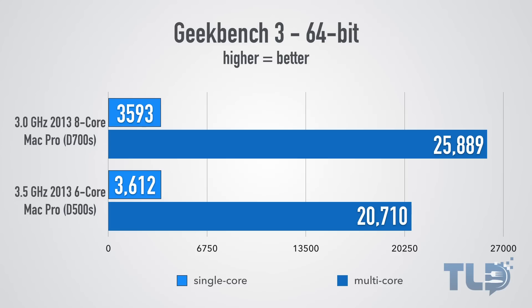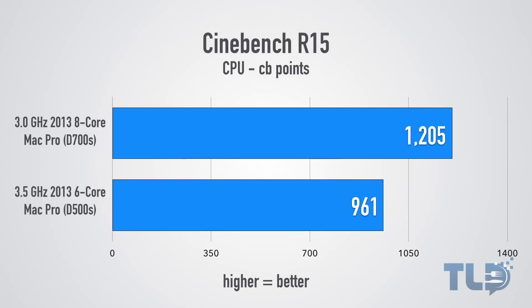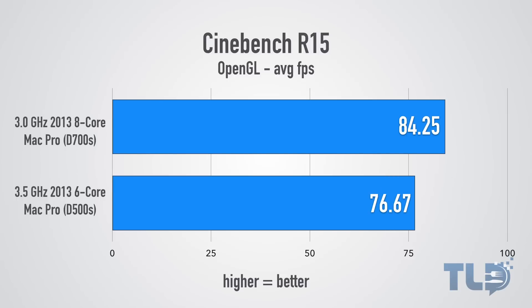Moving on to a few benchmarks: in Geekbench 3, 64-bit edition, the 8-core Mac Pro beats out the 6-core model by about 5,000 points in the multi-core score. As far as the single-core score, because the 6-core Mac Pro has a higher clock speed, it slightly outperforms the 8-core on that aspect, but not by a whole lot. Same thing on Cinebench R15 — on the CPU side, the 8-core outperforms the 6-core by a pretty healthy amount. On the OpenGL side, however, there wasn't a huge difference between the D700s and D500s — only about 7.5 frames per second difference.